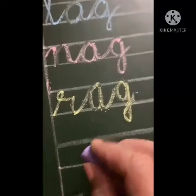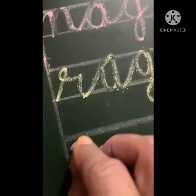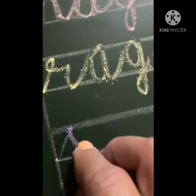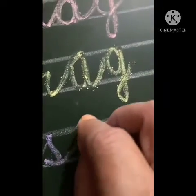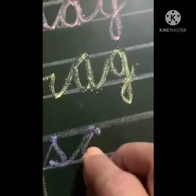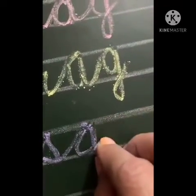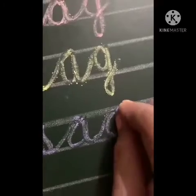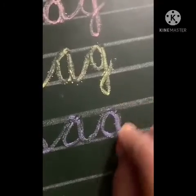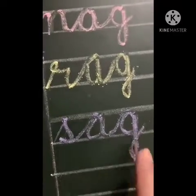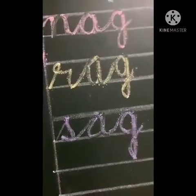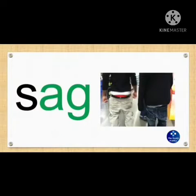The first consonant sound in the next word starts with 'S'. Write S, A, G — SAG. To hang loosely is called SAG.